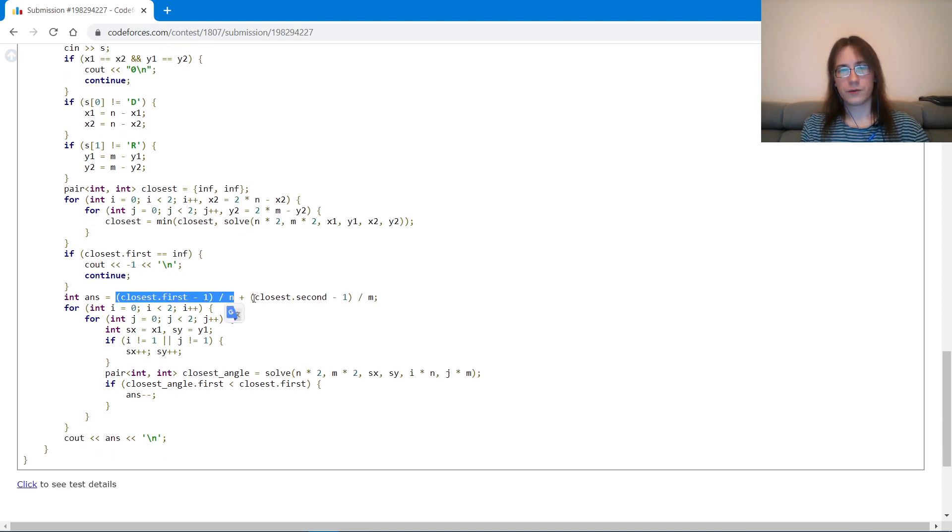Then I check if I haven't found any, I output negative 1. Otherwise I count the number of horizontal bounces, vertical bounces, and then I want to subtract all the bounces from an angle. Here I consider all four possible angles. And I know that I will hit an angle of every type at most once, because if I hit it twice it means I'm already stuck in a loop. So for each angle I just want to see will I hit it before I hit the goal. In order to do that I run the same function but I pass the coordinates of the angle as my goal.